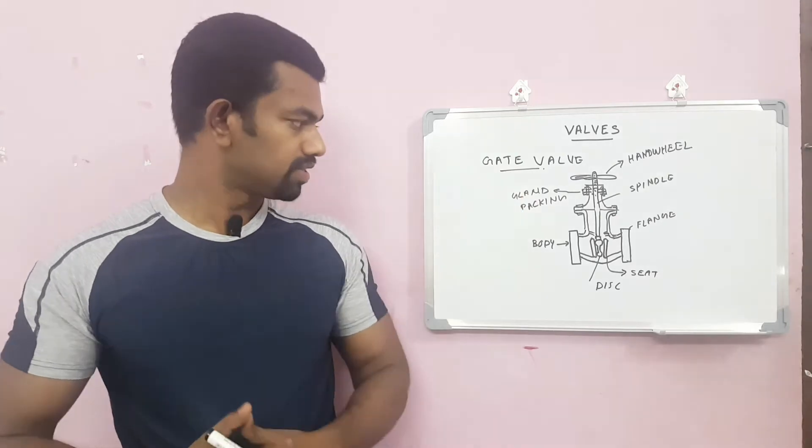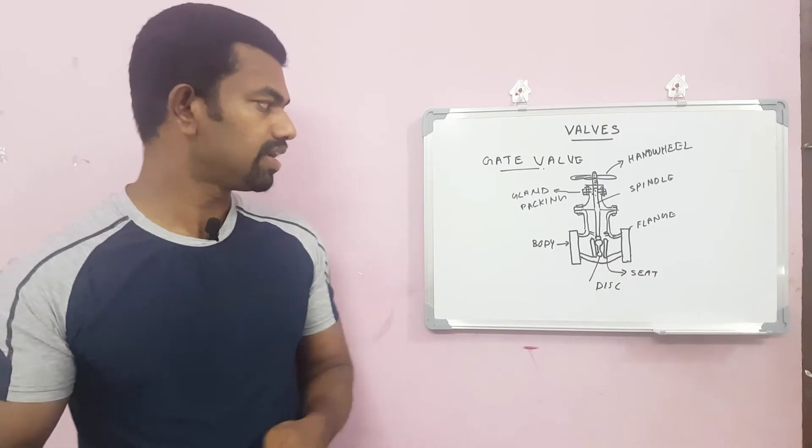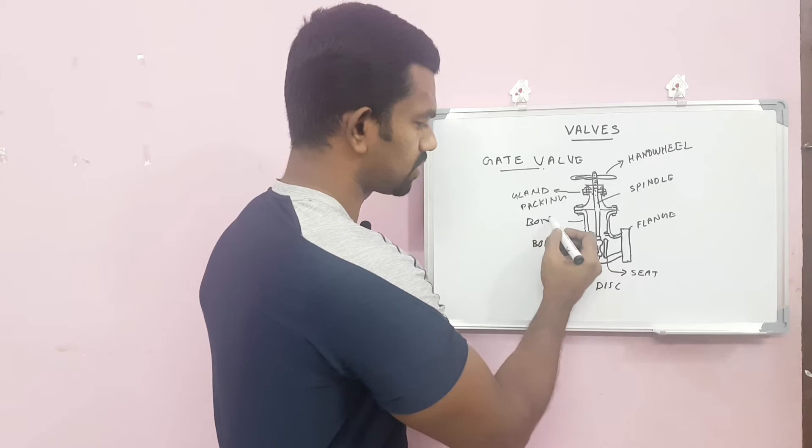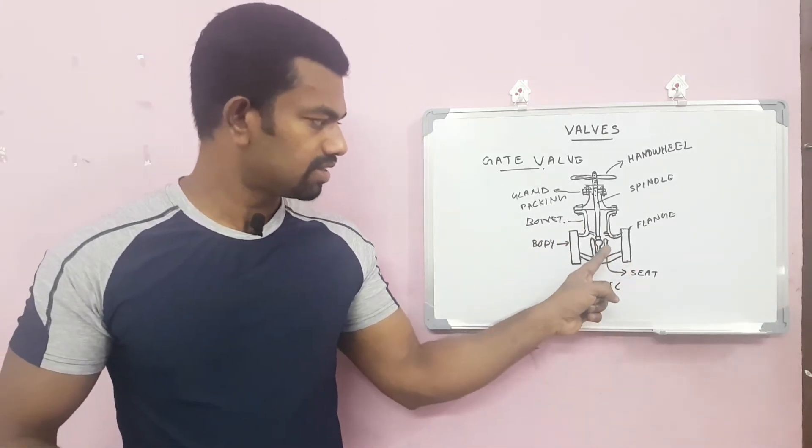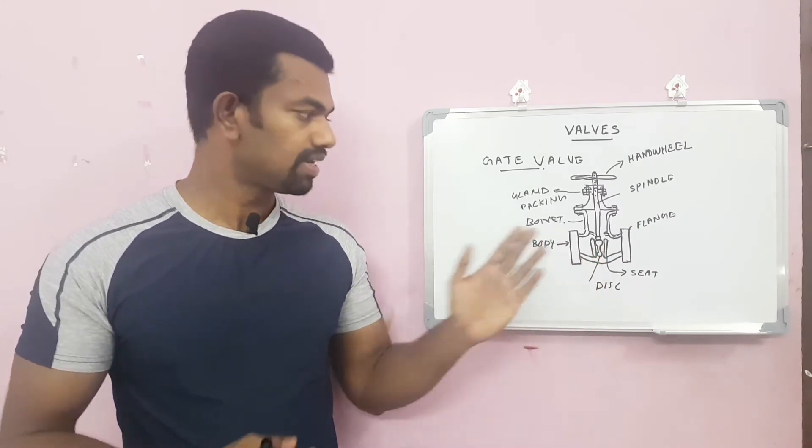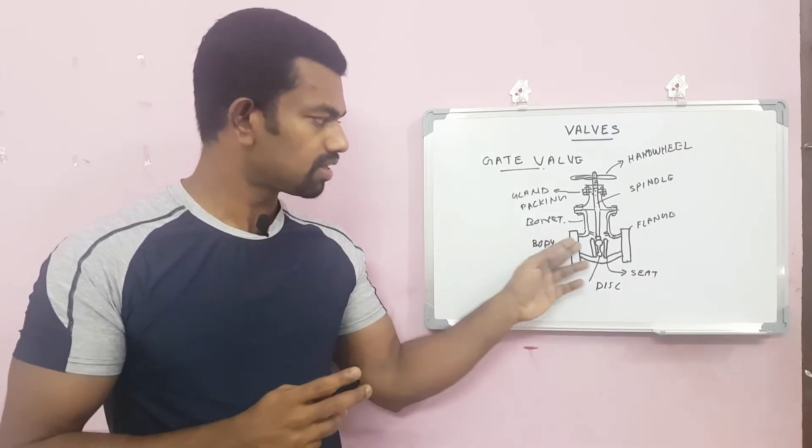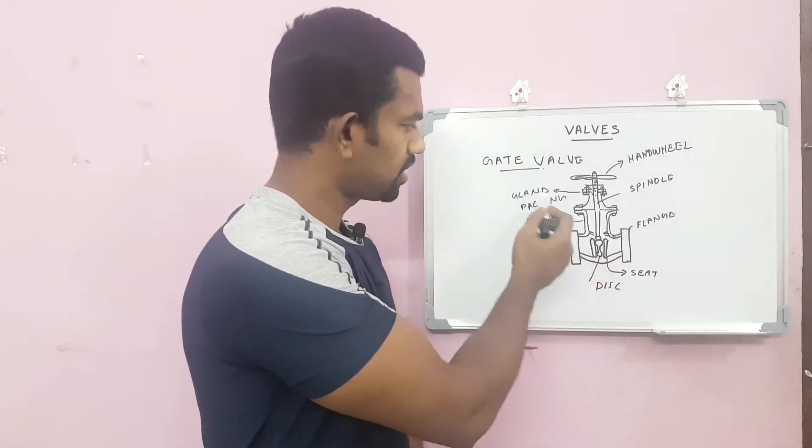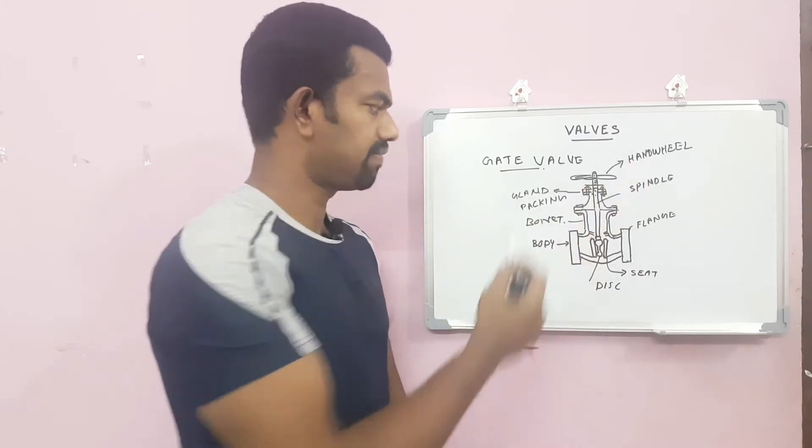Now we can take a look at a gate valve. These are the outer parts called the valve body, and this portion is called the bonnet. This area is called the valve seat. This is the valve disc. The disc comes in between the seat so it will close to restrict the flow. This is the bonnet packing, here is the valve gland packing, this is the spindle, and this is the handwheel.